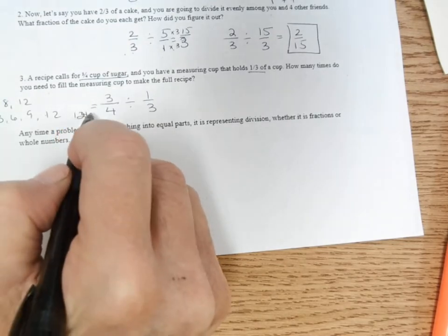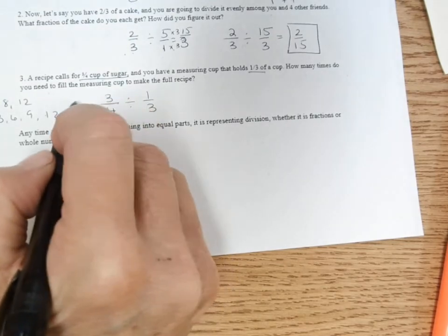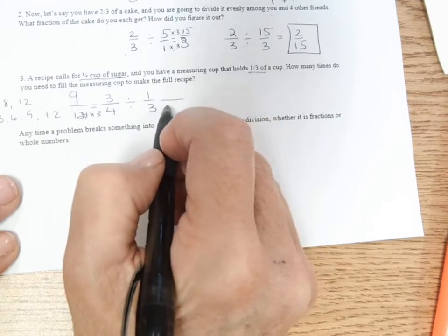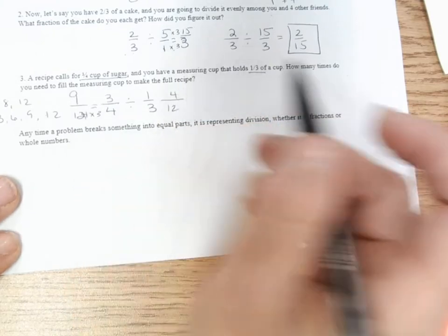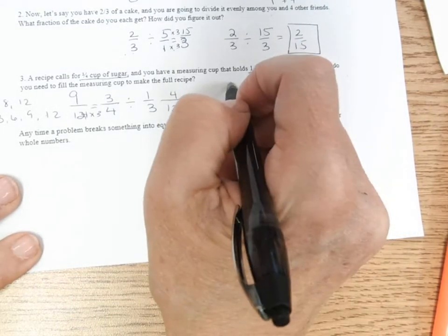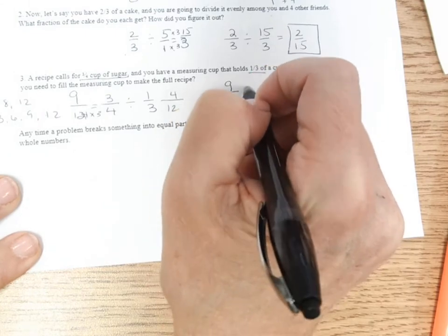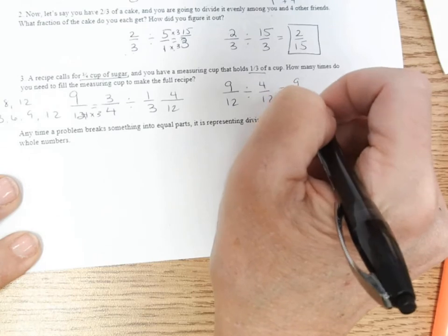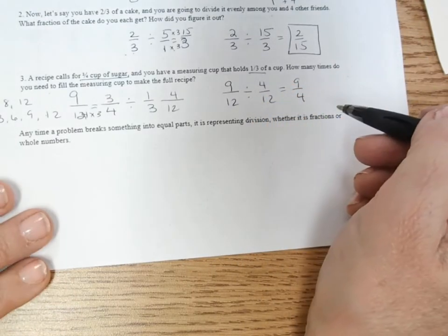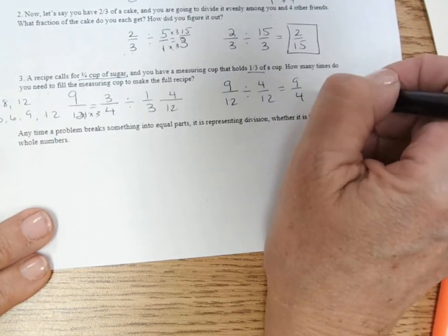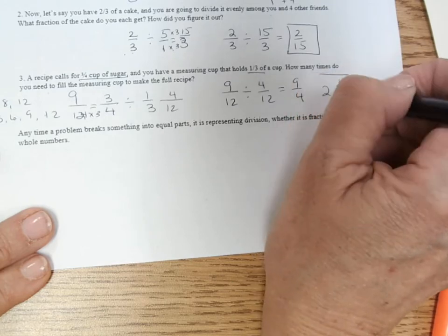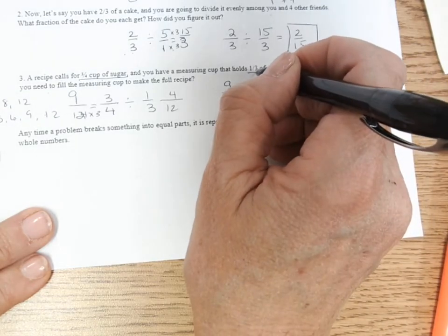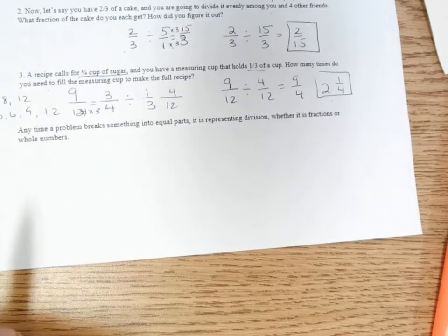So this is going to be times three times three, so it's nine-twelfths. This is going to be times four times four, four-twelfths. So nine-twelfths divided by four-twelfths equals nine-fourths. So I would have to fill that measuring cup two and one-fourth times in order to make sure if I only had the one-third cup measure to make my recipe.